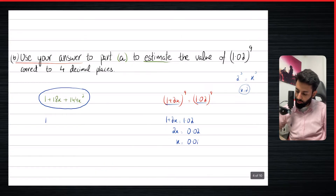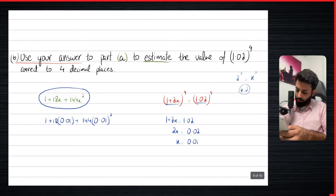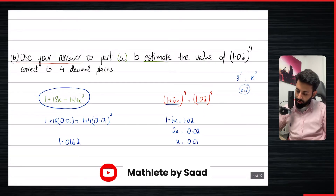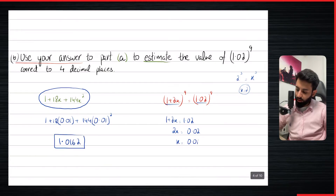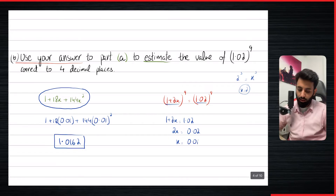So what we're really looking for is the value of x that we can plug in to estimate 1.02 to the power nine. We have just found that x is 0.01, so we're going to plug in 0.01 in place of x, and everything else will remain as it is. I would strongly suggest that you use your calculator. So 0.01, the whole thing squared — I'm looking at 1.0162. Since this is a terminating decimal, you should not round it off; you should give it exactly the way you see it: 1.0162.